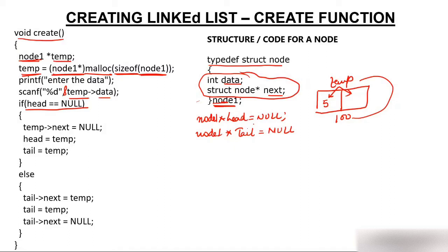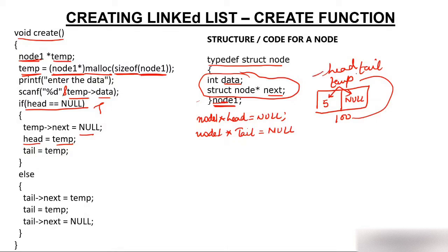Is head equal to null? Yes — currently head is null. So the condition is true, we go inside the if block. We assign temp->next = null, because this is a single node with no next node. Then we assign head = temp, so head will also have 100. We also assign tail = temp, so tail will also have 100. This node now has three names: head, tail, and temp. Head->data is 5, and head->next is null.